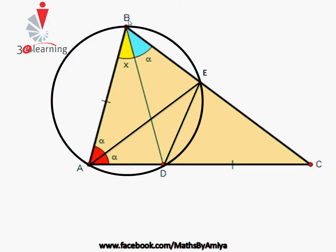Using the same property at BE: BE is a line making angle α at A, so the same line BE will make angle α at D as well. A chord making the same angles on the perimeter confirms this. So we have angle α at A, angle α at B, and angle α at D.